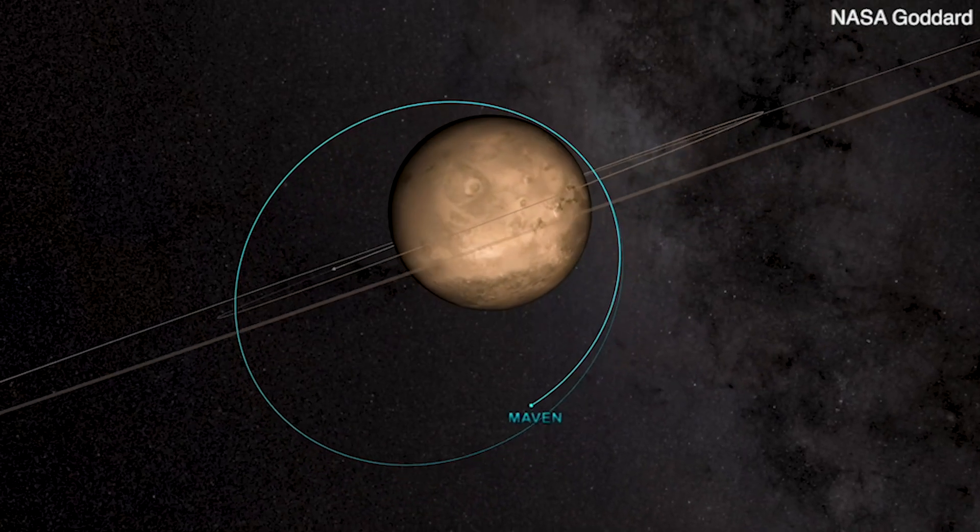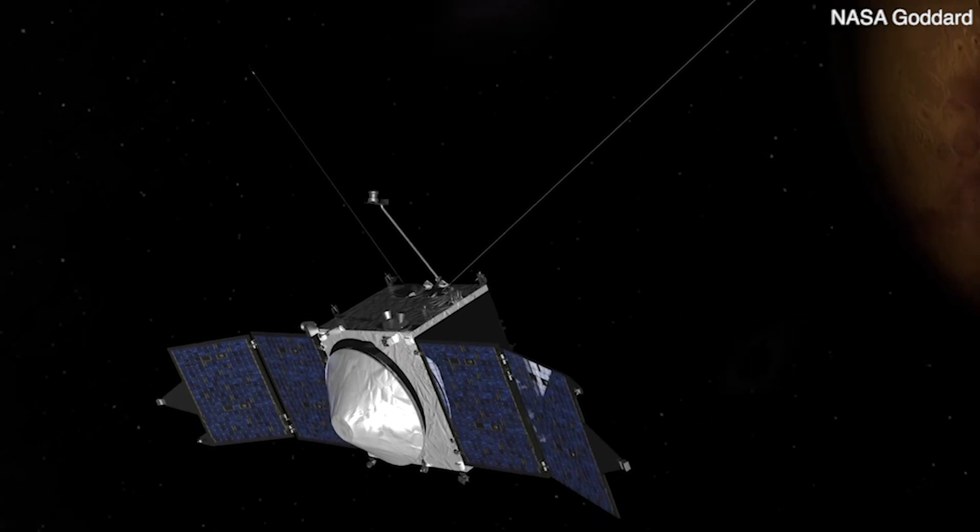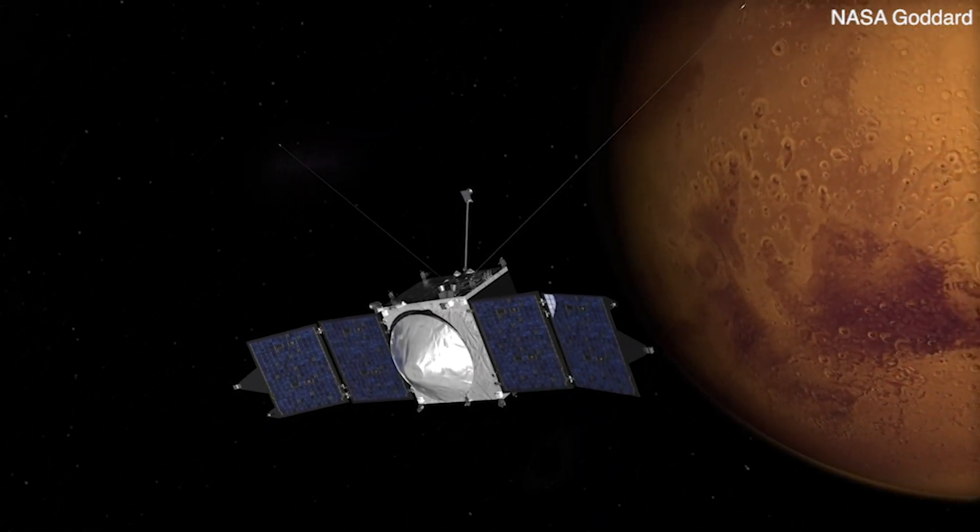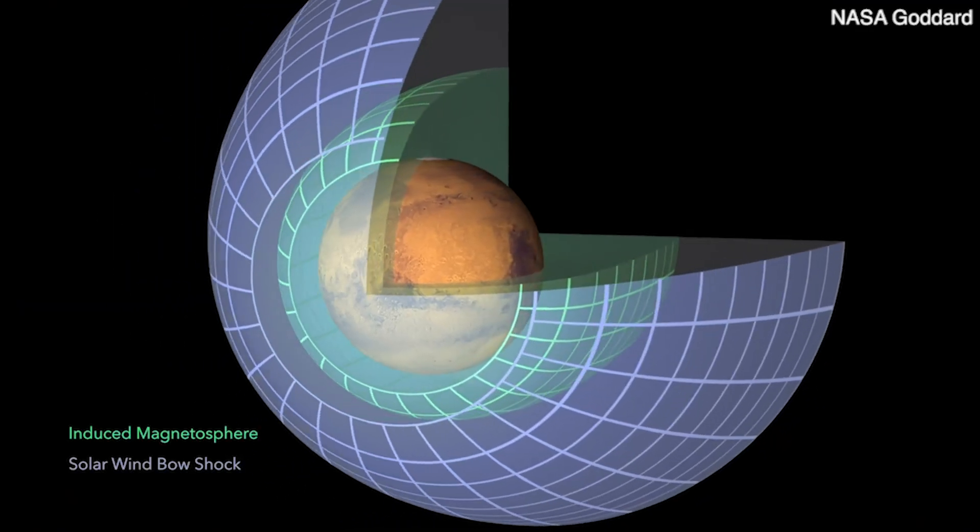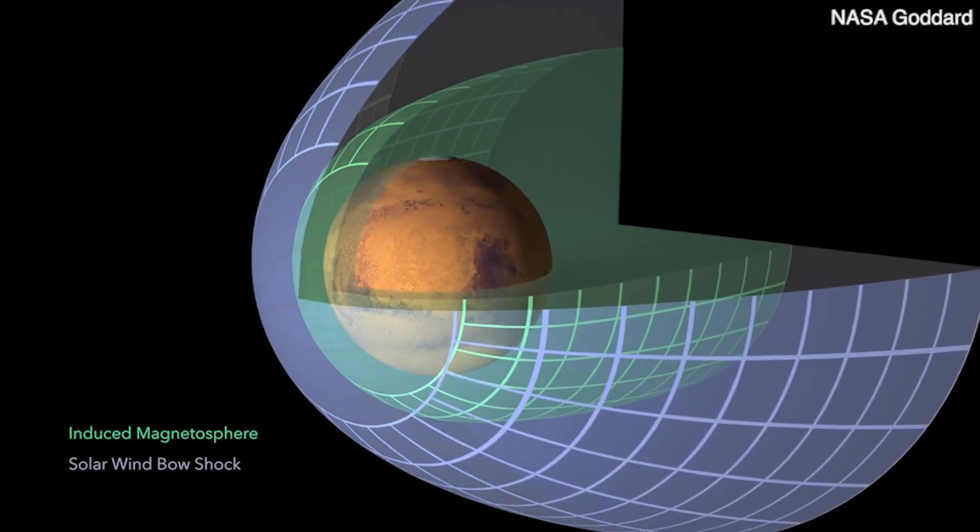One of the things we're trying to understand with MAVEN is whether a magnetic field for a planet is important for regulating the climate or allowing the planet to keep an atmosphere. Earth has a global dynamo magnetic field. Mars does not, but Mars has an induced magnetosphere, an induced magnetic field.